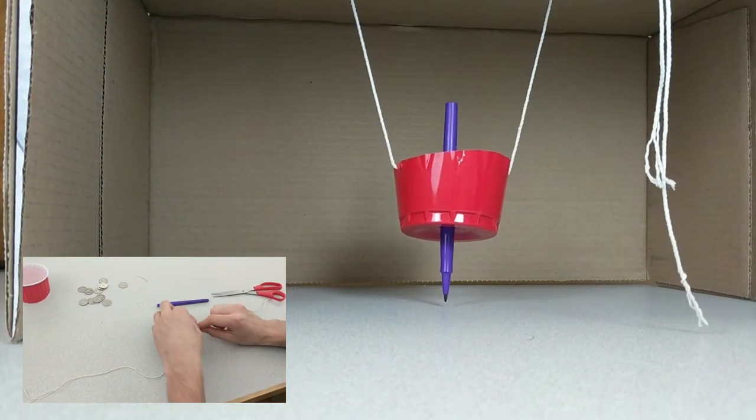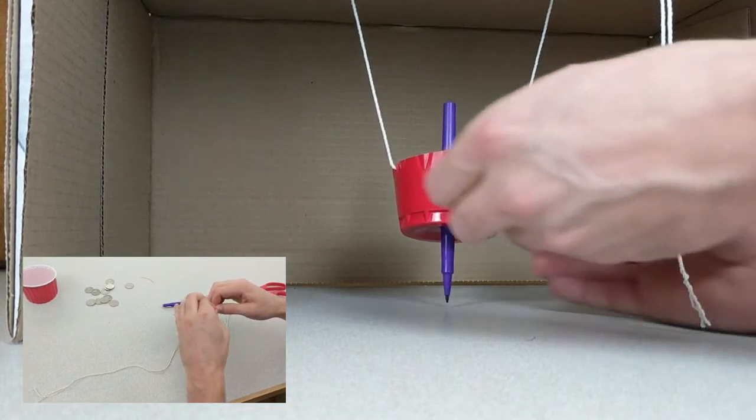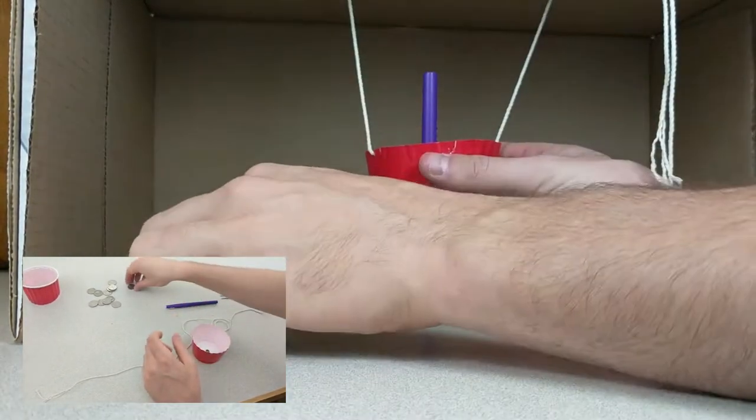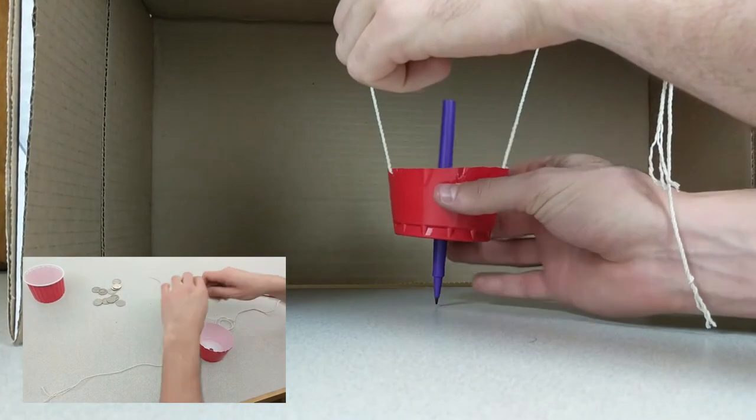Step five, you want to fill your cup with some coins. This is to help dampen the motion so that we get the motion just of the moving table.